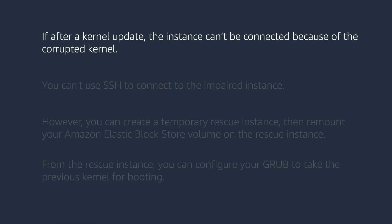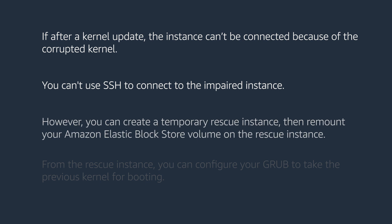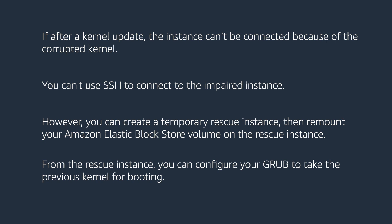In this video, I will walk you through all the steps that can be performed if after a kernel update the instance can't be connected because of the corrupted kernel. You can't use SSH to connect to the impaired instance. However, you can create a temporary rescue instance then remount your Amazon Elastic Block Store volume on the rescue instance. From the rescue instance, you can configure your GRUB to take the previous kernel for booting.